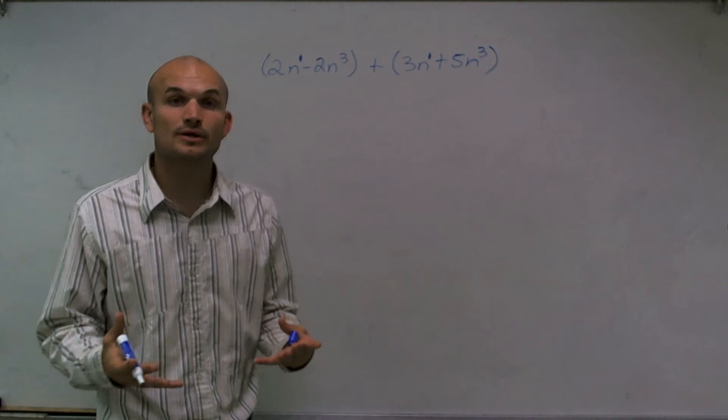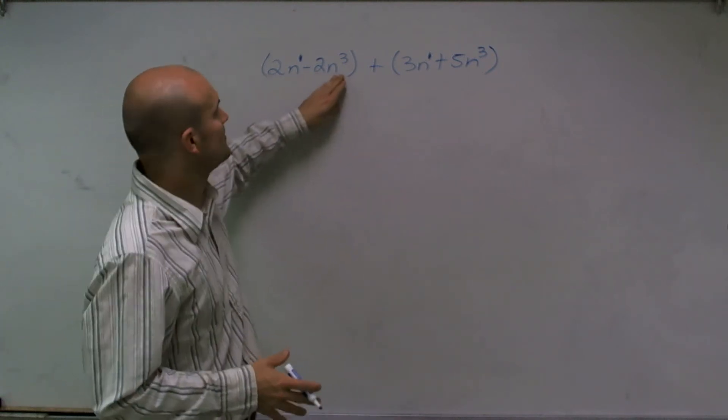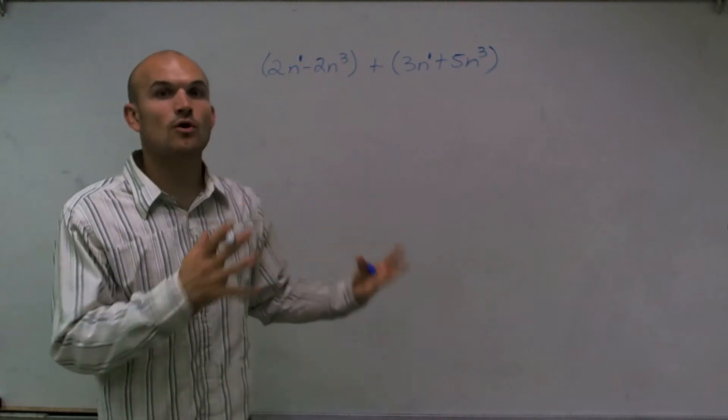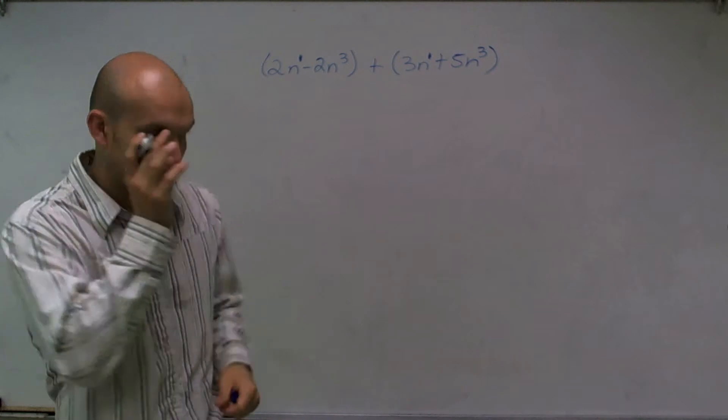So it's really important when looking at polynomials to look at what the base is, your variable, and then look at the exponent. Because we can only combine, add or subtract, when they have exactly the same base and exponent.